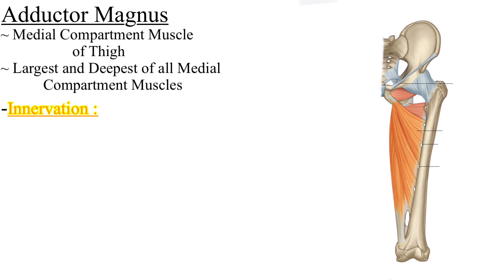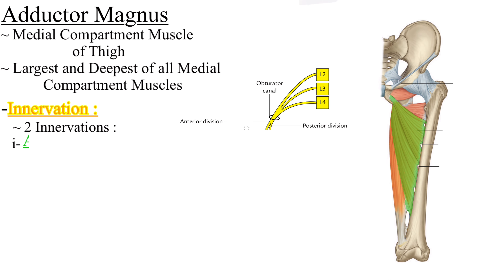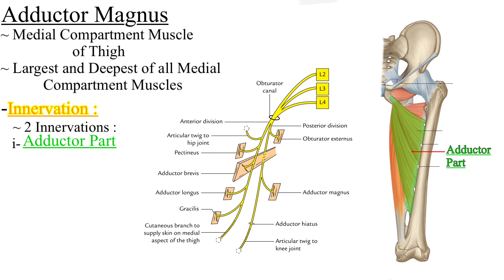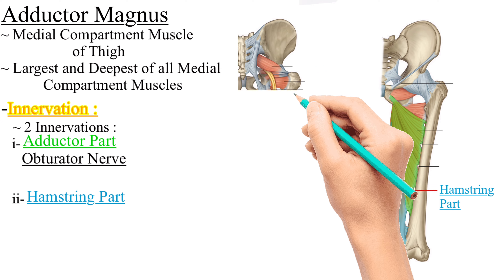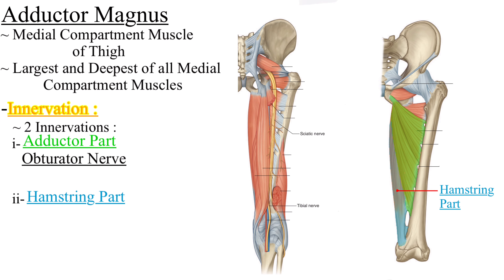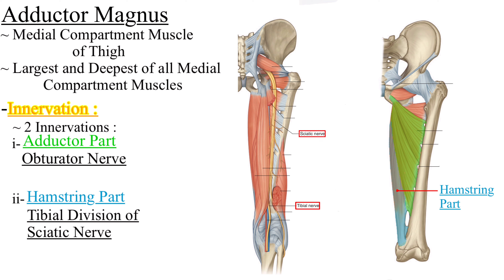Next is the innervation. Adductor magnus muscle has two innervations. The adductor part is innervated by the obturator nerve, while the hamstring part is innervated by the tibial division of the sciatic nerve. Both parts have contribution from L2, L3, and a minor contribution from L4 spinal nerve roots.